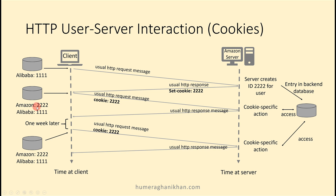Now the client computer has two cookies on its hard disk: amazon.com cookie is 2222 and alibaba.com cookie is 1111. Whenever the client interacts with the amazon.com server website, it sends a usual request message, and in that message it specifies which cookie belongs to amazon.com. Amazon is then able to serve this client specifically according to its entry in the database where it keeps all of this user's details.